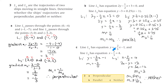Part c: line L1 clearly has a slope of minus 2 on 5. Rearranging L2 into y equals mx plus b gives y equals 3x minus 12, so m2 equals 3. Since m1 does not equal m2, they're not parallel; and m1 does not equal minus 1 over m2, so they're not perpendicular — the answer is neither.